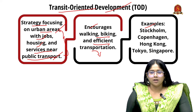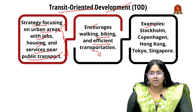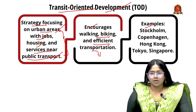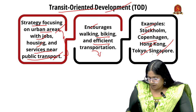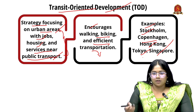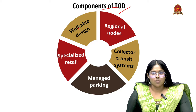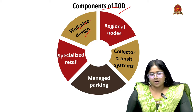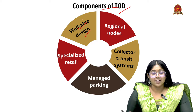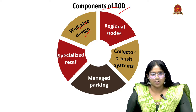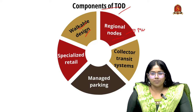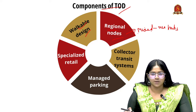For example, cities like Stockholm, Copenhagen, Hong Kong, Tokyo, and Singapore have successfully implemented this strategy, so India can take inspiration from such cities. Now let us see the components of Transit Oriented Development. First is having a walkable design — prioritizing pedestrian-friendly areas. Next is regional nodes — mixed-use hubs near the transit area such as houses, offices, and so on.